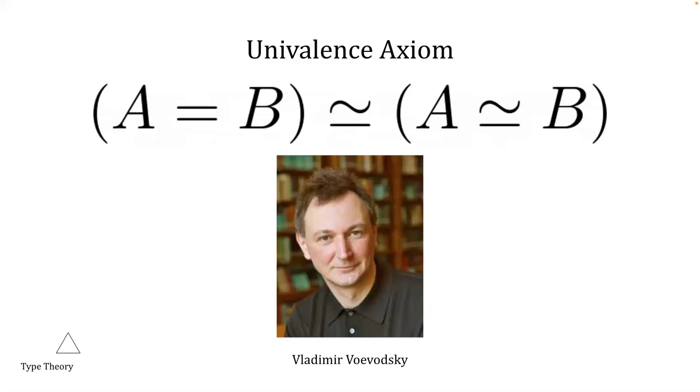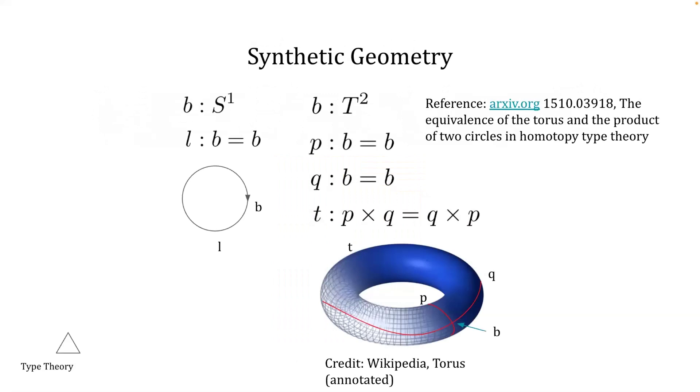The name homotopy comes from algebraic geometry. It denotes the interpretation of type theory where types correspond to a topological space, and equivalence corresponds to a path on that space between two points. This is a form of synthetic geometry where we can use types to define geometry. Here are a few examples.